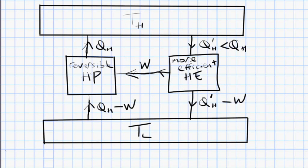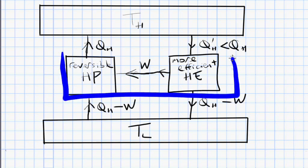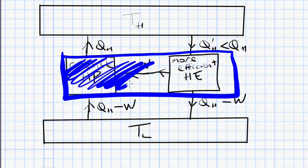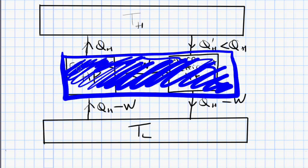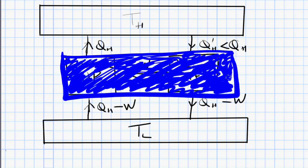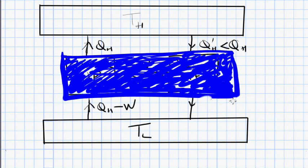So we'll use the good old thermodynamics technique of drawing a box around these two machines, the heat pump and the heat engine, so that we can then ignore everything that's inside the box and just concentrate on what we can see going into and out of the box. So on the hot side, we have QH coming out of the box. We have QH prime coming into the box. QH prime is smaller than QH. So we have a net flow of heat out of this blue machine into the high temperature reservoir. And the net flow of heat is QH minus QH prime.